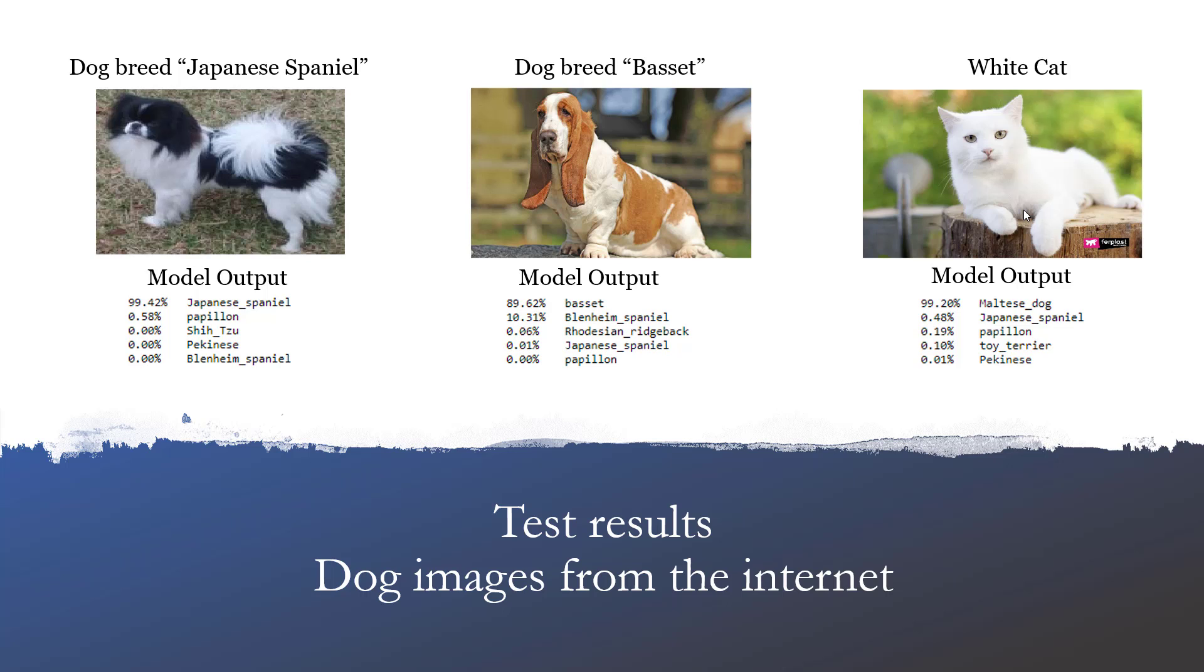The next few examples are of a Japanese spaniel, where the model did predict it correctly. Then the next is a basset, which again it did predict correctly.